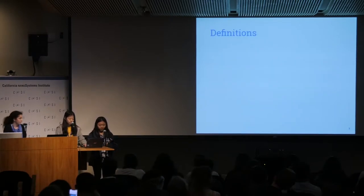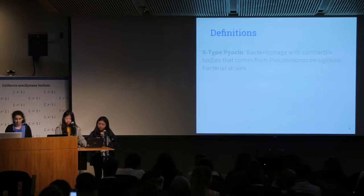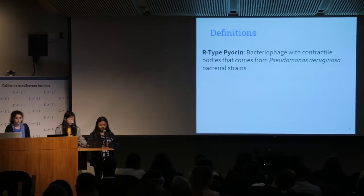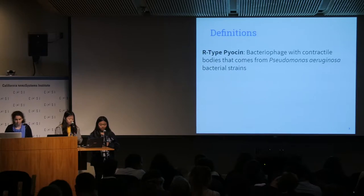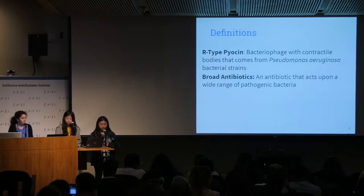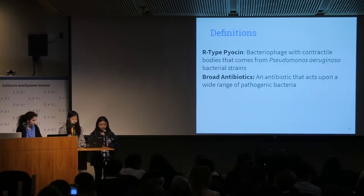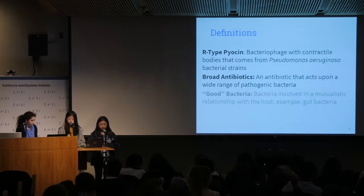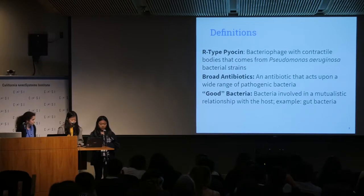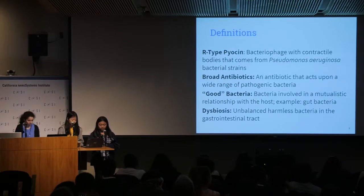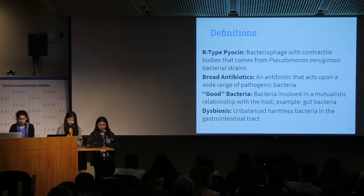The following terms will be brought up several times throughout the presentation. An R-type Pyocin is a bacteriophage with contractile bodies that comes from Pseudomonas aeruginosa bacterial strains, while a broad antibiotic is an antibiotic that acts upon a wide range of pathogenic bacteria. Good bacteria are bacteria involved in a mutualistic relationship with the host, with an example being gut bacteria. Finally, dysbiosis is an illness in which there is an unbalanced amount of harmless bacteria in the gastrointestinal tract.